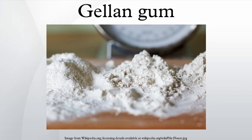Gellan gum was an integral part of the now-defunct Orbit soft drink. It is used as a gelling agent alternative to gelatin in the manufacture of vegan varieties of gum candies. It is also used in soy milks to keep the soy protein suspended in the milk, and is listed as an ingredient in Soylent 2.0.